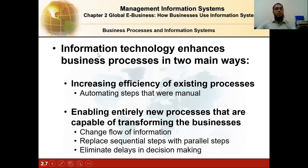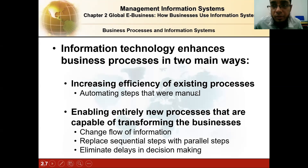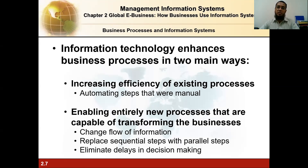Information technology enhances business processes in two main ways. First, by increasing the efficiency of existing processes through automating steps — a process that takes a month manually may only take two to three days with automation. Second, by enabling entirely new processes that transform businesses, such as virtual learning systems in universities that were previously unimaginable.